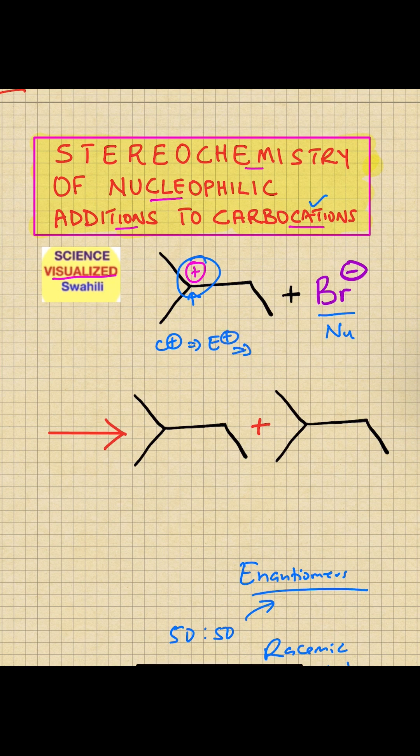Electrophiles are electron poor species and therefore they are Lewis acids. Remember, Lewis acids accept electron pairs. Nucleophiles, on the other hand, have lone pairs of electrons or a minus charge like in this case, and therefore they donate electron pairs.